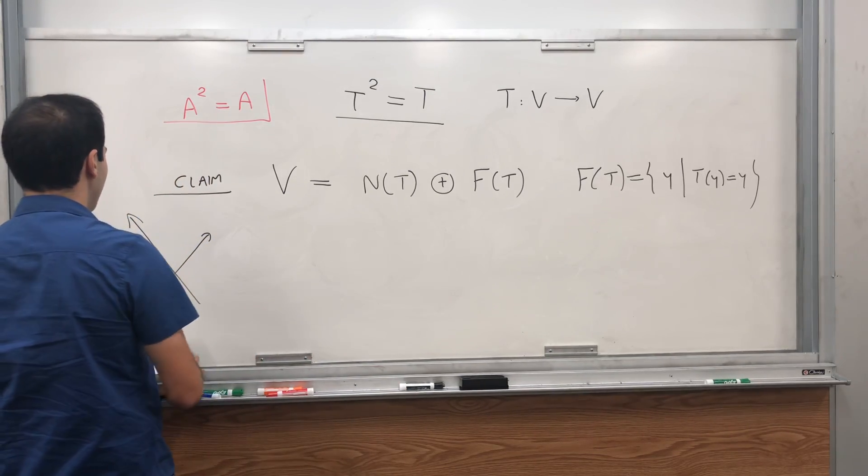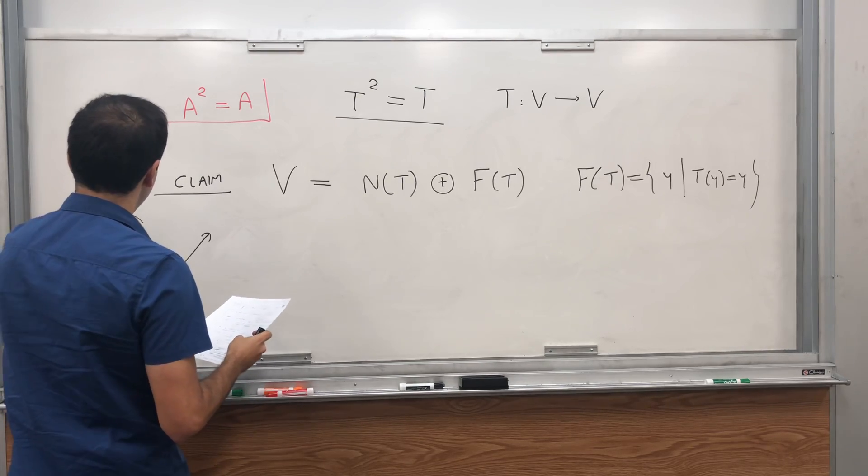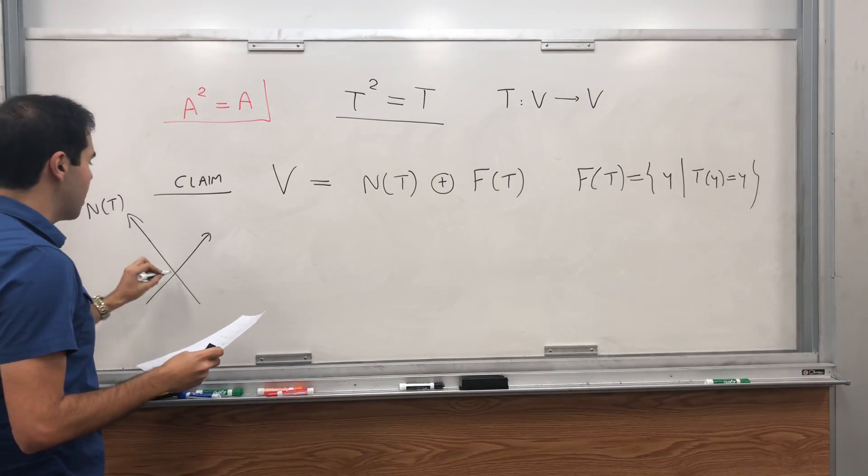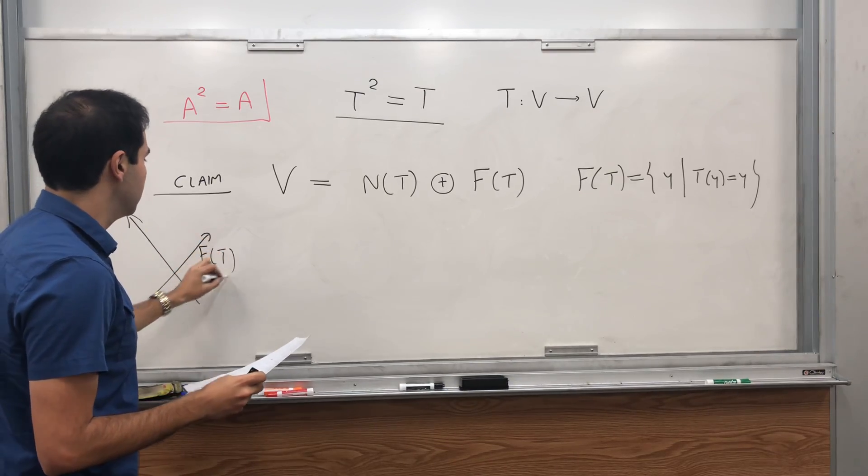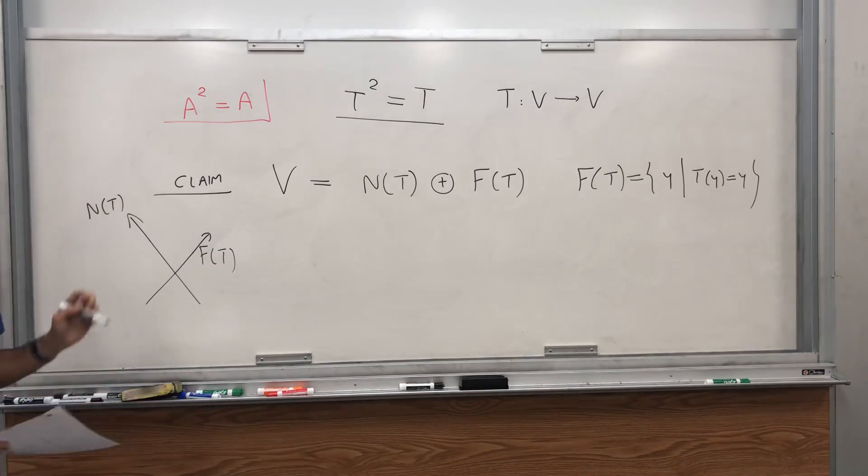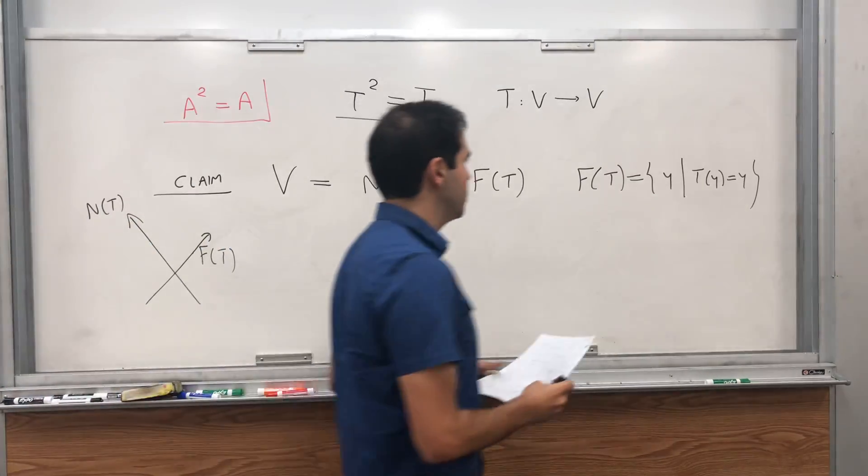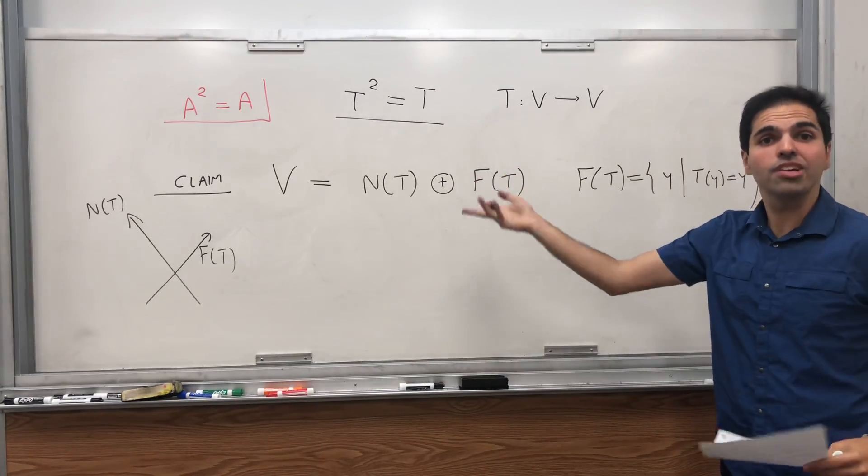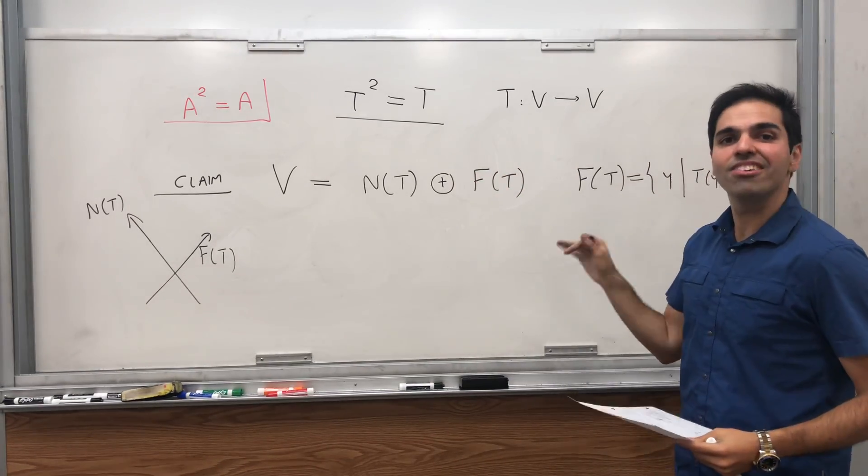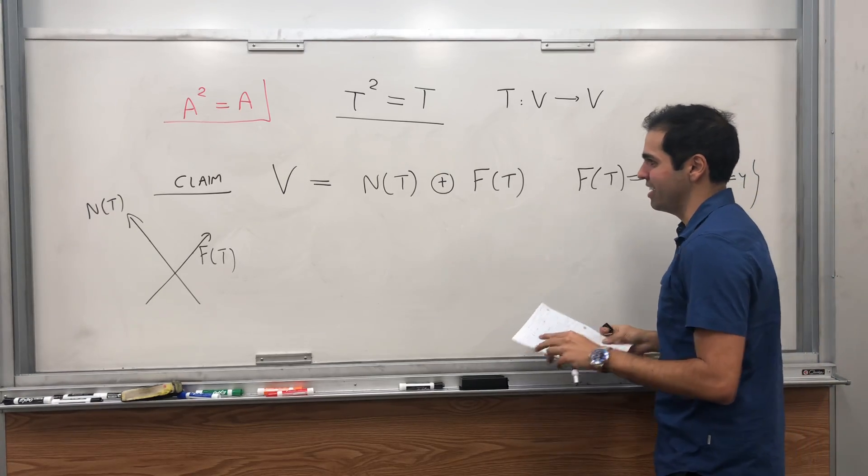So it's a set of vectors y in V such as T(y) equals y. So it turns out you can write V, you can decompose your whole space in terms of two axes. One, where T sends all the vectors of that axis to zero, and the other one, maybe, let me switch that. And another one where, so first of all, T where T sends any vector to the axis of two zero and F(T) where T doesn't do anything to F(T). So it's nearly, it makes it invariant, so it's a fixed point, and I'll tell you why this is useful.